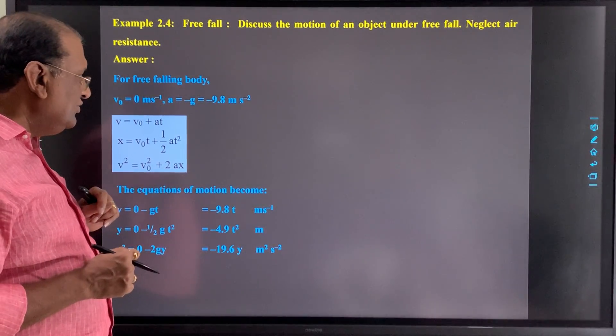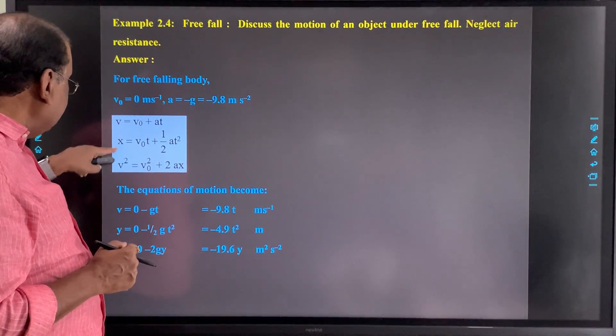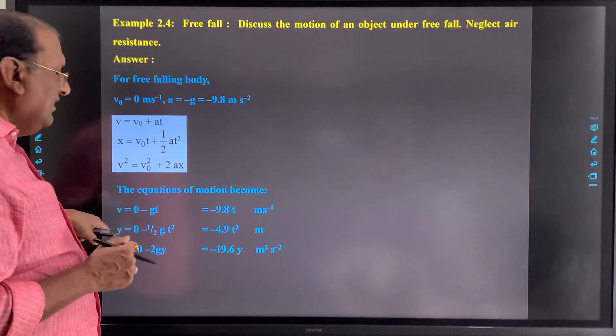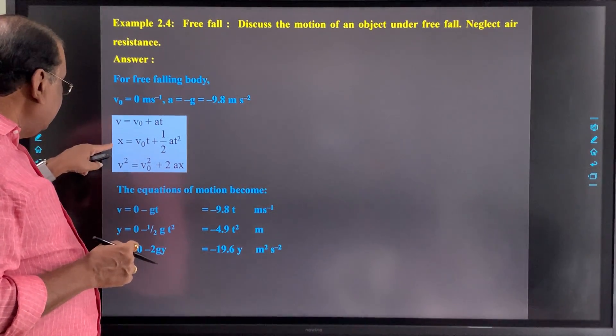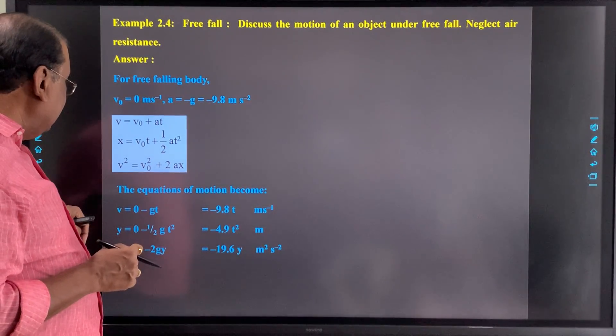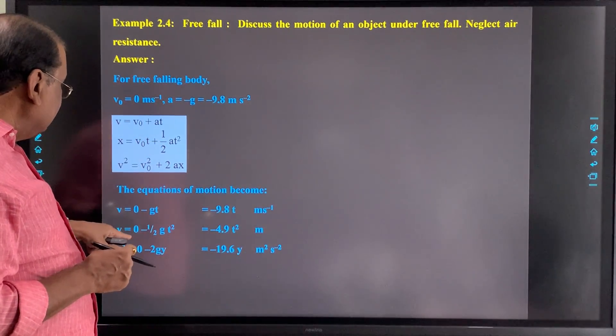Second equation: x or y you can take here. Vertical motion we consider, so we take here y. So v₀ that is 0, a that is minus g, so minus half gt square.